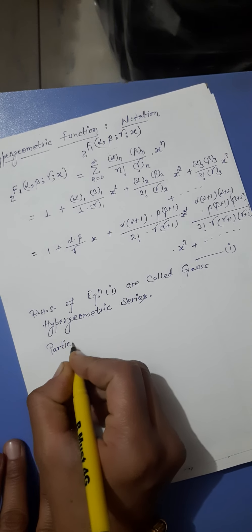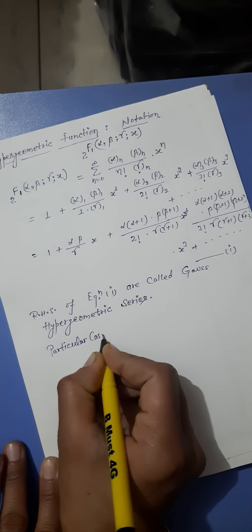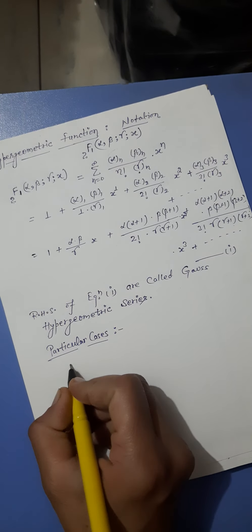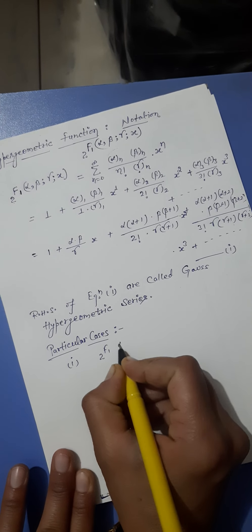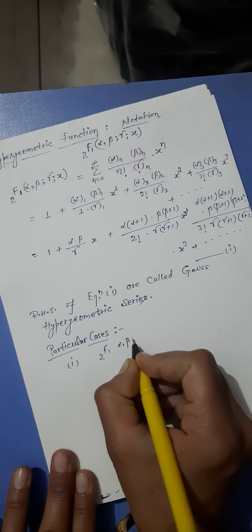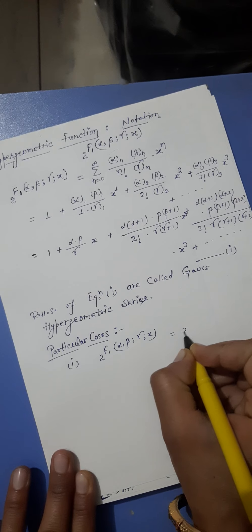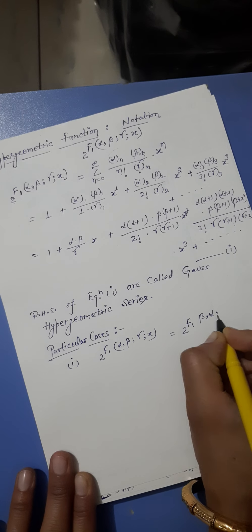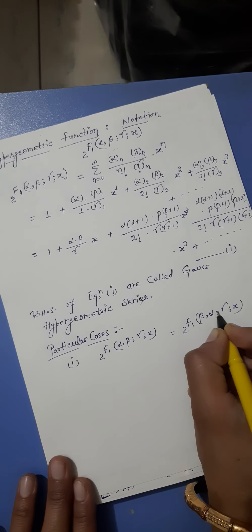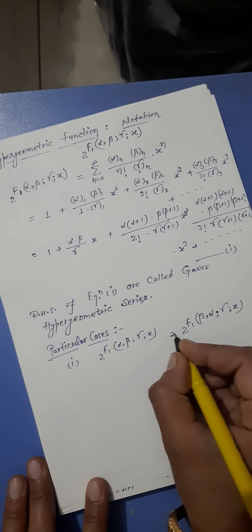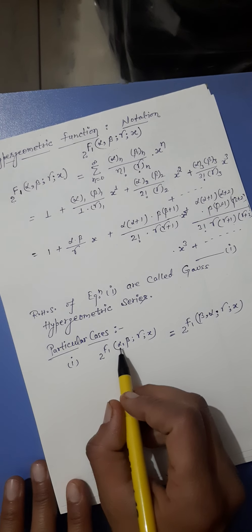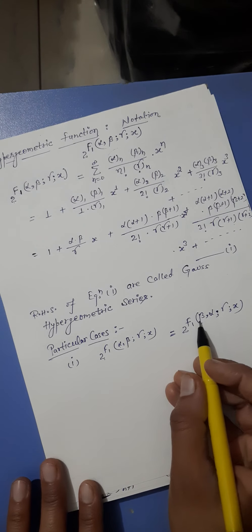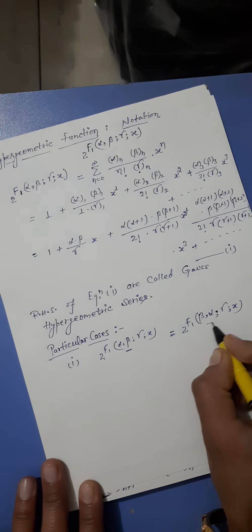Next we will discuss particular cases. 2F1(α, β; γ; x) = 2F1(β, α; γ; x). In equation first, if we interchange the parameters α and β — that is, replace α by β and β by α — then 2F1(α, β; γ; x) = 2F1(β, α; γ; x).